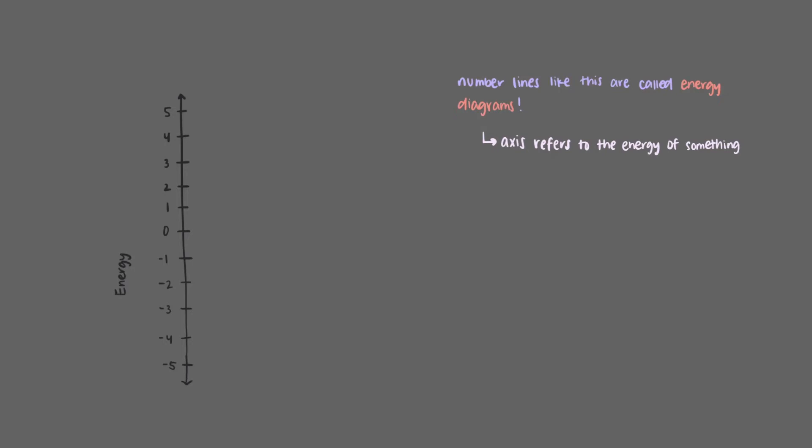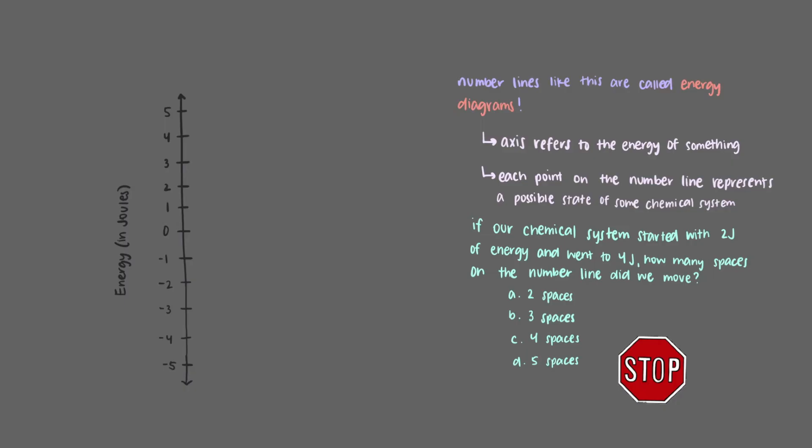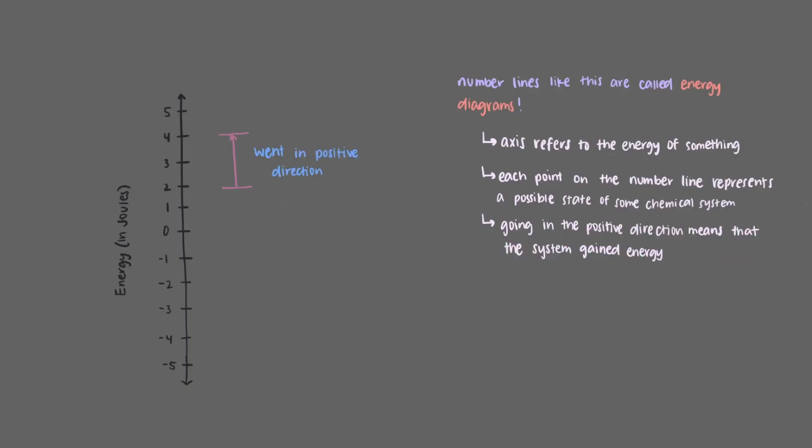The unit that we use for energy is joules. So all of these numbers on the number line will represent quantities of joules. Each point on this number line represents a possible state of some chemical system. So if our chemical system started with 2 joules of energy and went to 4 joules, how many spaces on the number line did we move? We moved 2 spaces. To go from 2 joules to 4 joules, we went in the positive direction. This means that our chemical system gained energy. So the change in energy, delta E, is plus 2 joules.